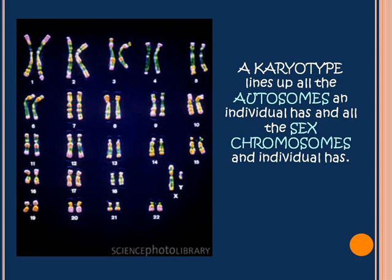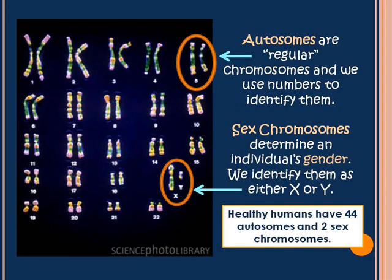The karyotype will line up autosomes and sex chromosomes for an individual. The autosomes usually come first because they are labeled with a number, and then the sex chromosomes come last because they're labeled with a letter. Autosomes are regular chromosomes — they control things like your hair color, your eye color, if you have allergies, if you're going to have freckles, your longevity, things like that.